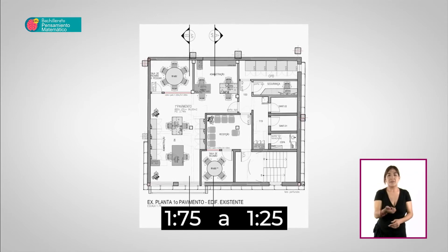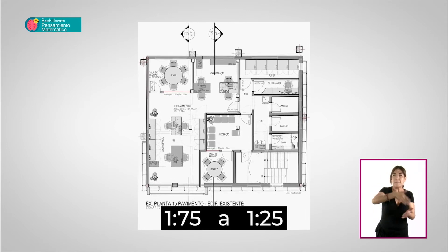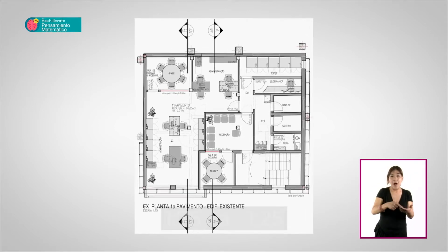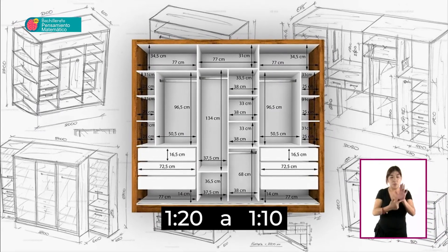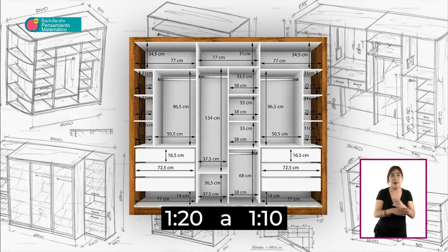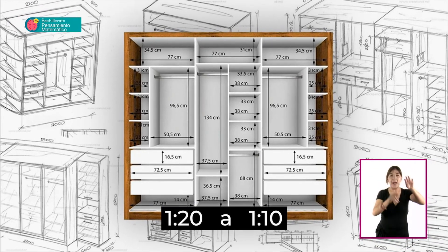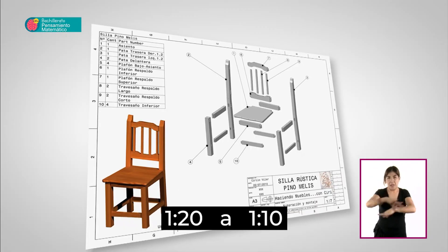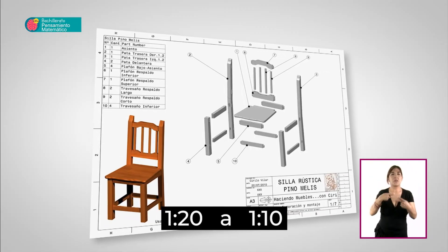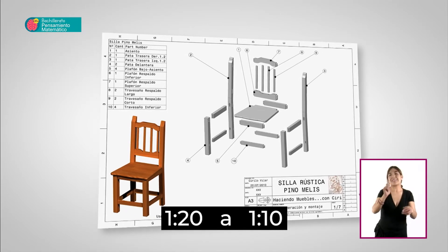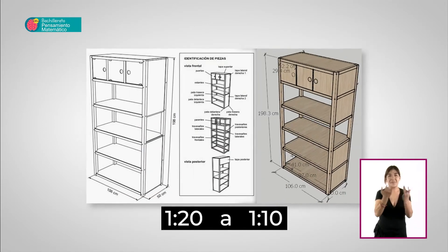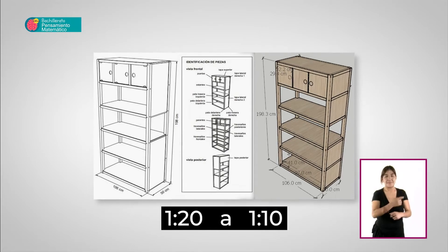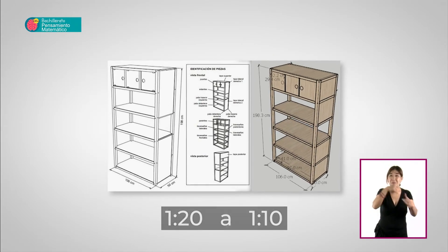Usando escalas de mayor detalle, podemos indicar revestimientos y pinturas, además de espacios internos con mobiliario predefinido. El rango más detallado suele utilizarse en la representación de objetos de mobiliario, tanto para arquitectos como para diseñadores de muebles. Su uso es común para explicar el funcionamiento de los elementos que se proponen en el plano, así como para el uso más detallado de alguno de los materiales.